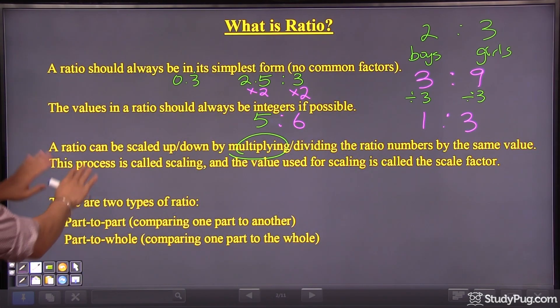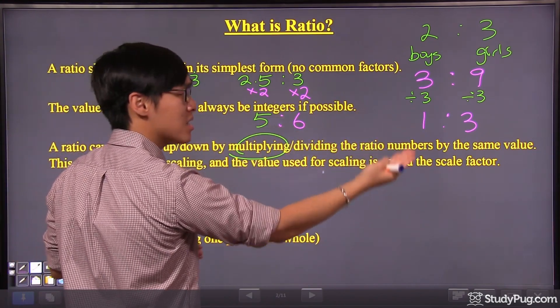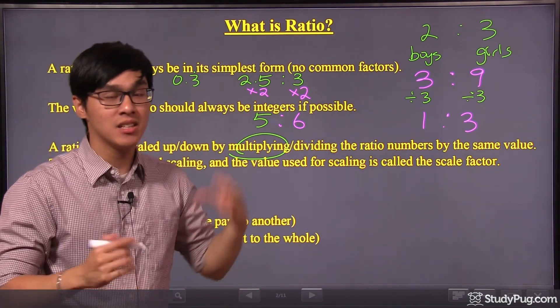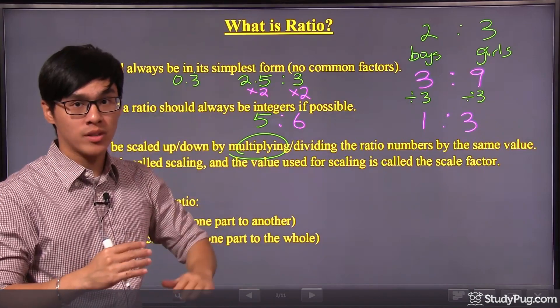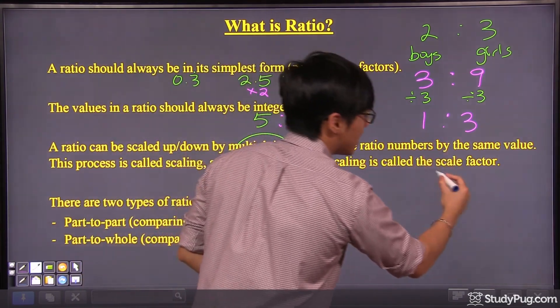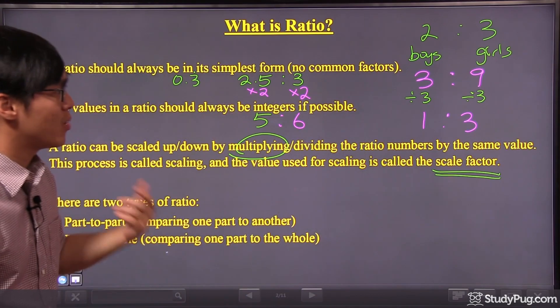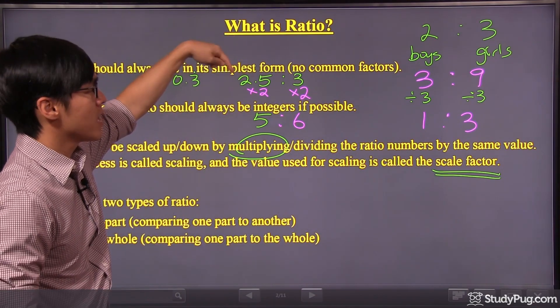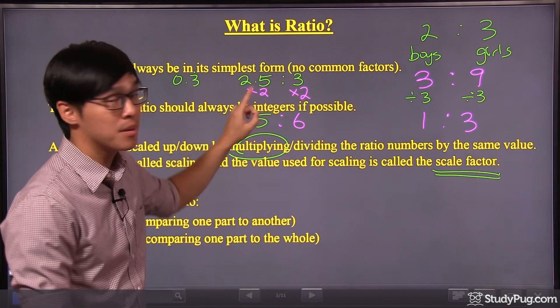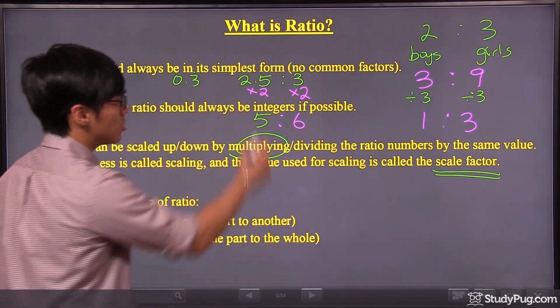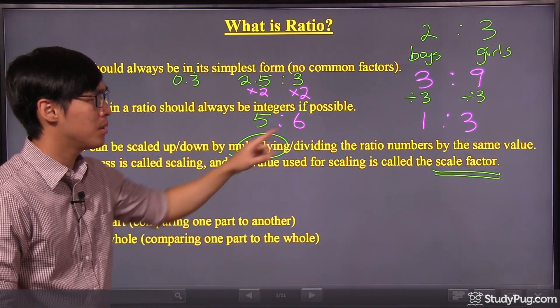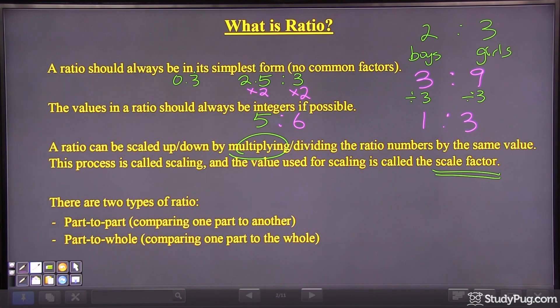So we're not done with this point yet. We can multiply and divide the ratio numbers by the same value. And this process, it's called scaling. We're scaling the numbers of the ratios either up or down. Scaling up, scaling down. And the value being used for scaling, it's called the scale factor. This is a good terminology that we need to know. So take this as an example. How do we scale from 2.5 to 3 up to 5 to 6? Well, we are multiplying both numbers by 2. So in that case, the 2 is the so-called scale factor, because this is the number we're using to multiply the ratio numbers.